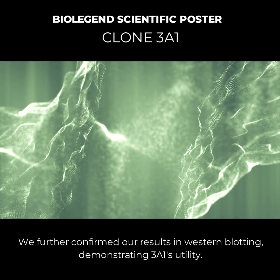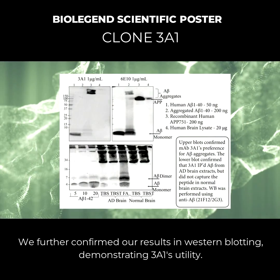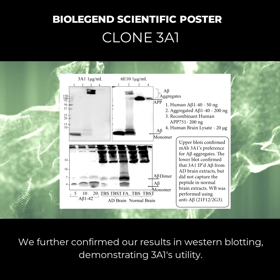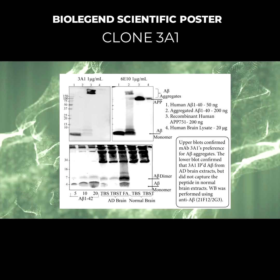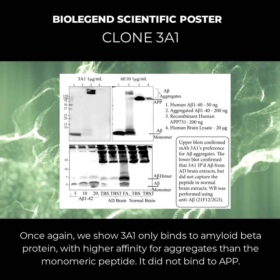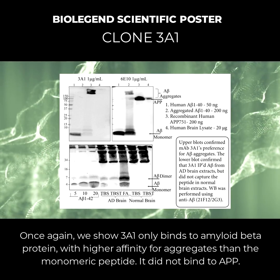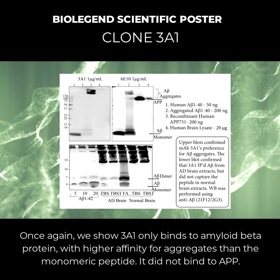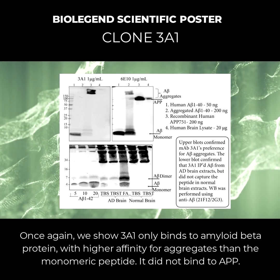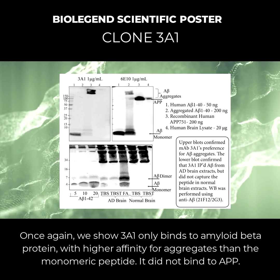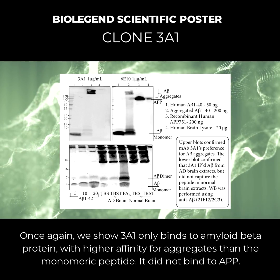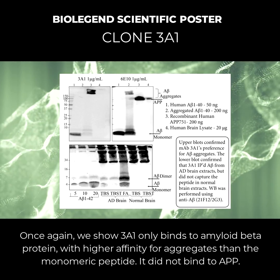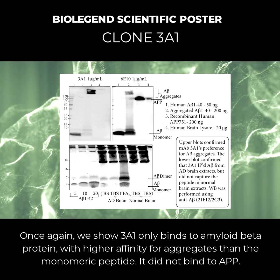We further confirmed our results in Western blotting, demonstrating 3A1's utility. Once again, we show 3A1 only binds to amyloid beta protein, with higher affinity for aggregates than the monomeric peptide. It did not bind to APP.